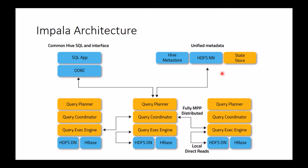Each data node can be co-located with what's referred to as the Impala daemon. Imagine you have three data nodes — you want to co-locate these with your HDFS data nodes for better throughput and performance. On every data node you have the Impala daemon installed, along with other components: the state store and catalog store, which collectively manage metadata and work alongside Hive's Metastore to manage metadata around your tables.